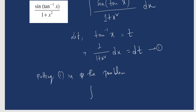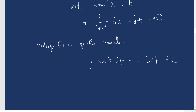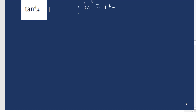Putting equation one into the problem: the integration of sin(tan⁻¹x) — replace tan⁻¹x with t, so sin(t) — and 1/(1+x²) dx is replaced with dt. Now the integration of sin(t) gives minus cos(t) plus c. Since this is important, we have to replace t again. So the final answer is minus cos(tan⁻¹x) plus c.